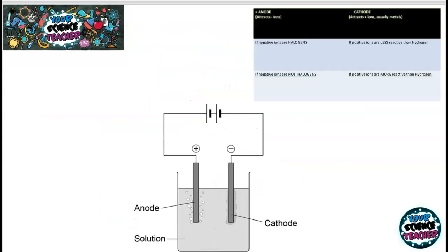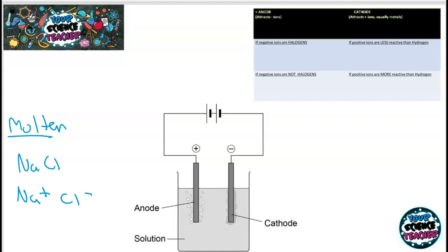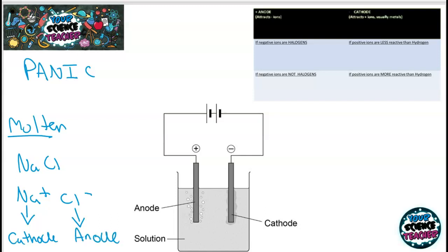The next required practical is electrolysis of molten salts and solutions. For molten electrolysis, it's easy to work out your products — you simply make what is inside your electrolyte. For example, molten NaCl gives Na⁺ and Cl⁻ ions. Remember: positive is anode, negative is cathode. Sodium ions go to the negative electrode (cathode) because opposites attract, and the negative chloride ions go to the positive electrode (anode). For molten solutions it's very straightforward.